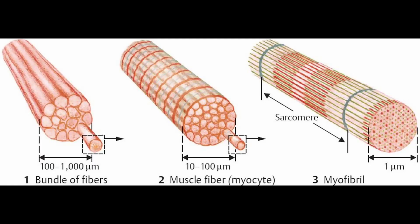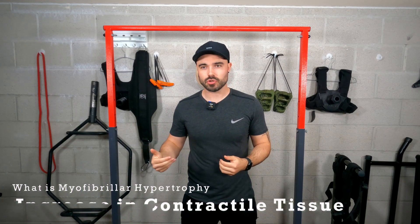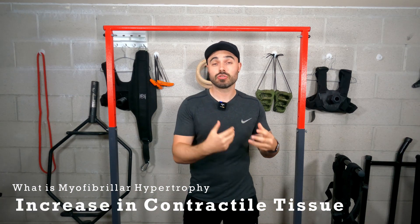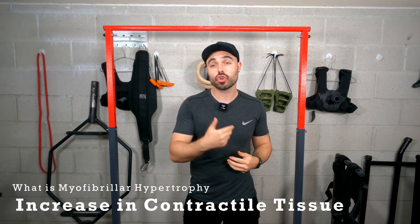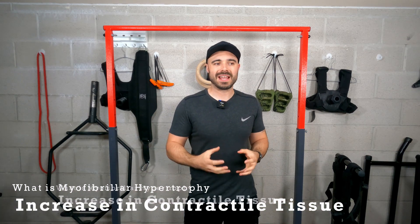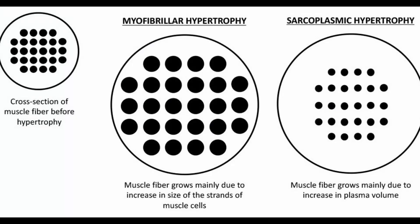It makes sense that the more myofibrils we have — an increase in number and density — the stronger we're going to be. The key thing about myofibrillar hypertrophy is that we are increasing our contractile tissue, which means the muscle gain we achieve will directly correspond and translate into an increase in strength.